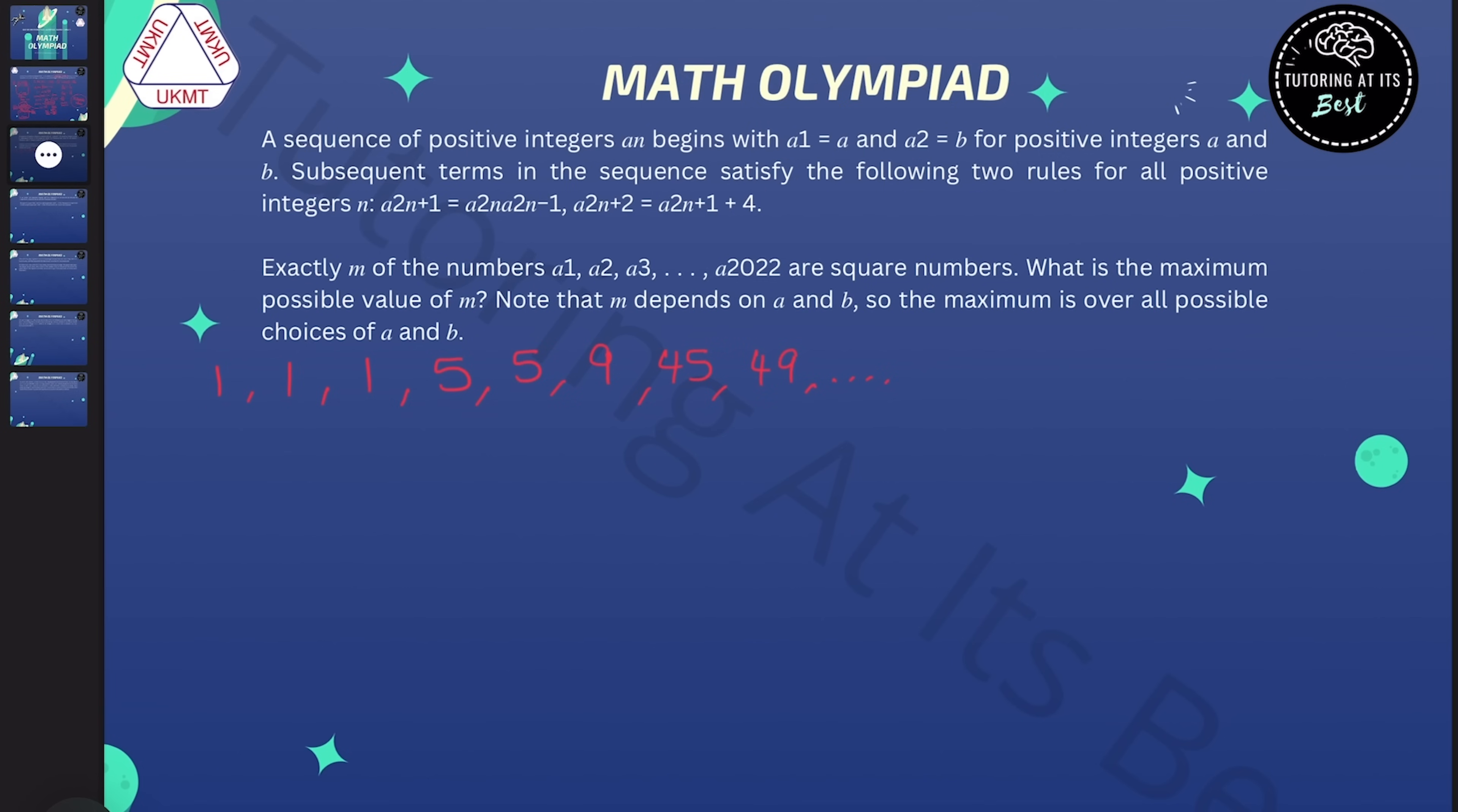So I can see at once that there's quite a few squares here. We know 1 is a square, we've got 9 which is a square, and 49 which is a square. So that is term 1, term 6, and term 8.